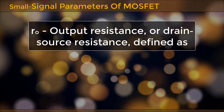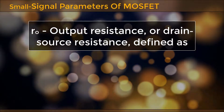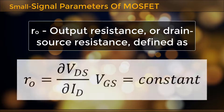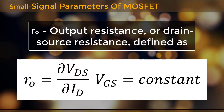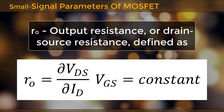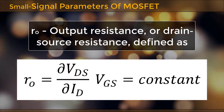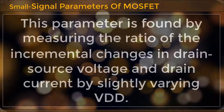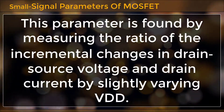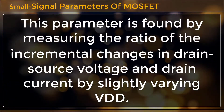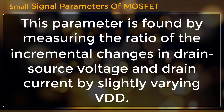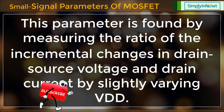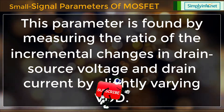RO is the output resistance, or drain-source resistance, defined as RO equals delta VDS divided by delta ID where VGS is constant. This parameter is found by measuring the ratio of the incremental changes in drain-source voltage and drain current by slightly varying VDD.